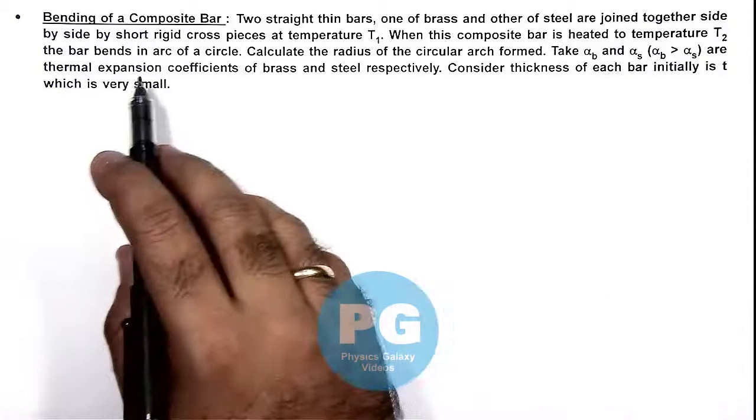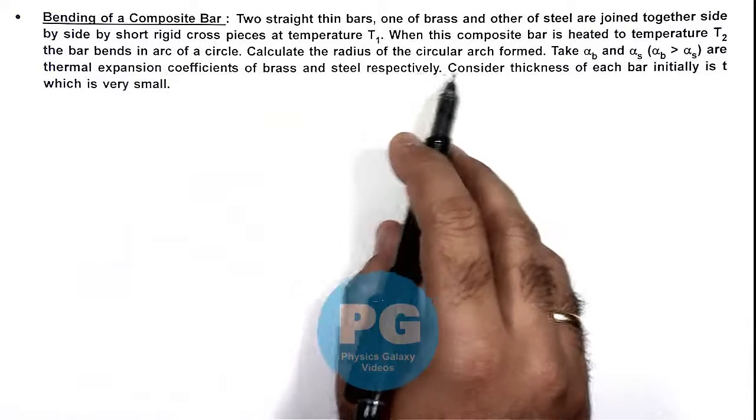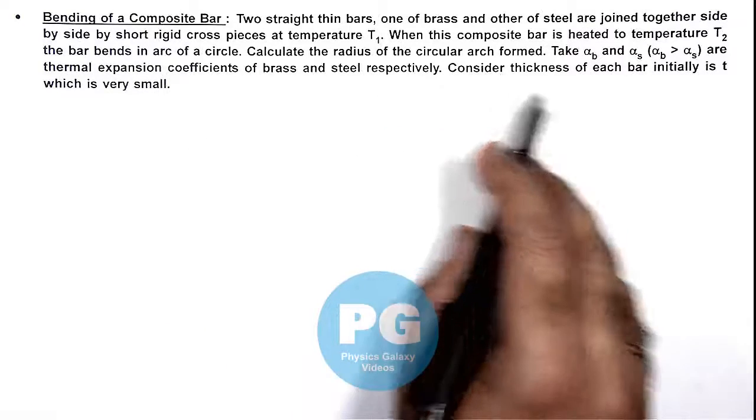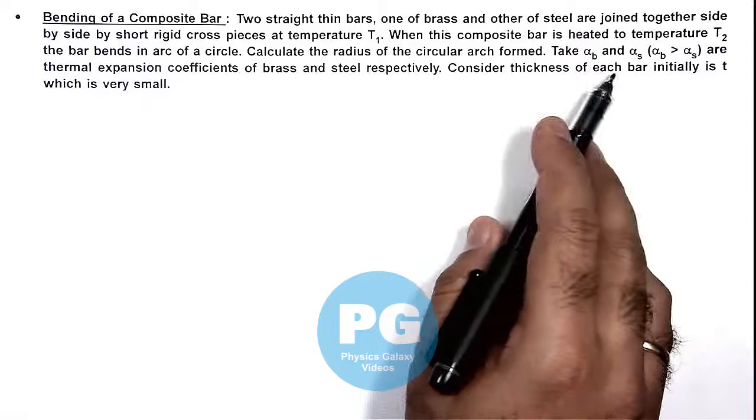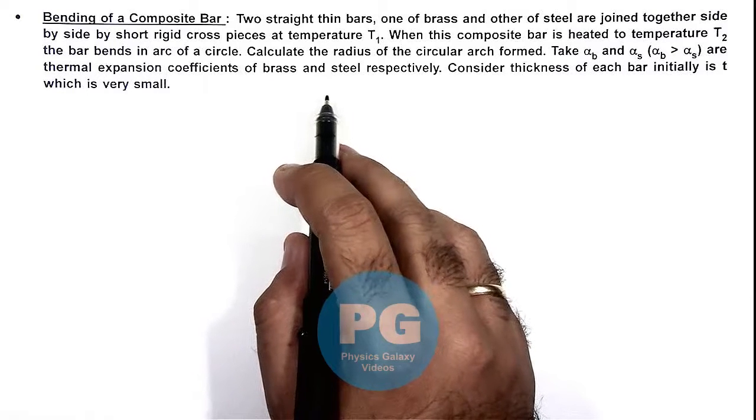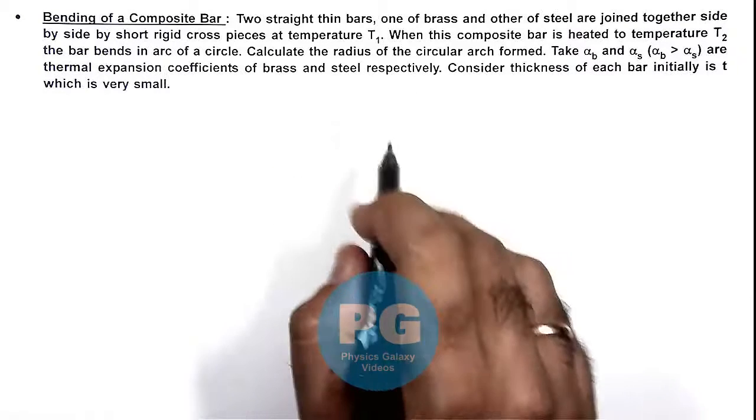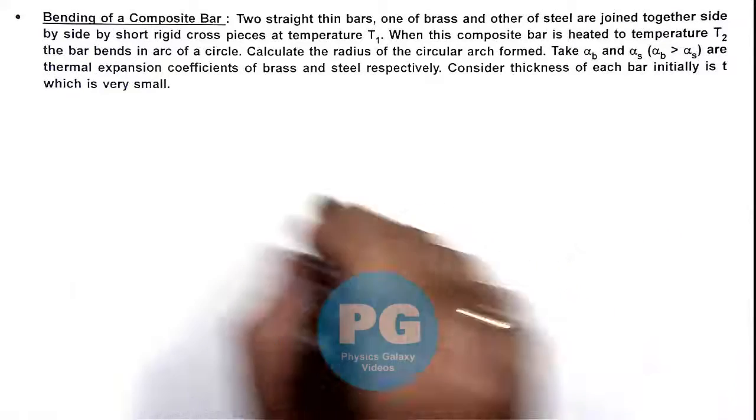the bar bends in an arc of a circle, and we are required to calculate the radius of the circular arc formed. We are required to take alpha_b and alpha_s as the thermal expansion coefficients of brass and steel respectively. The thickness of each bar is also given as t, which is very small.